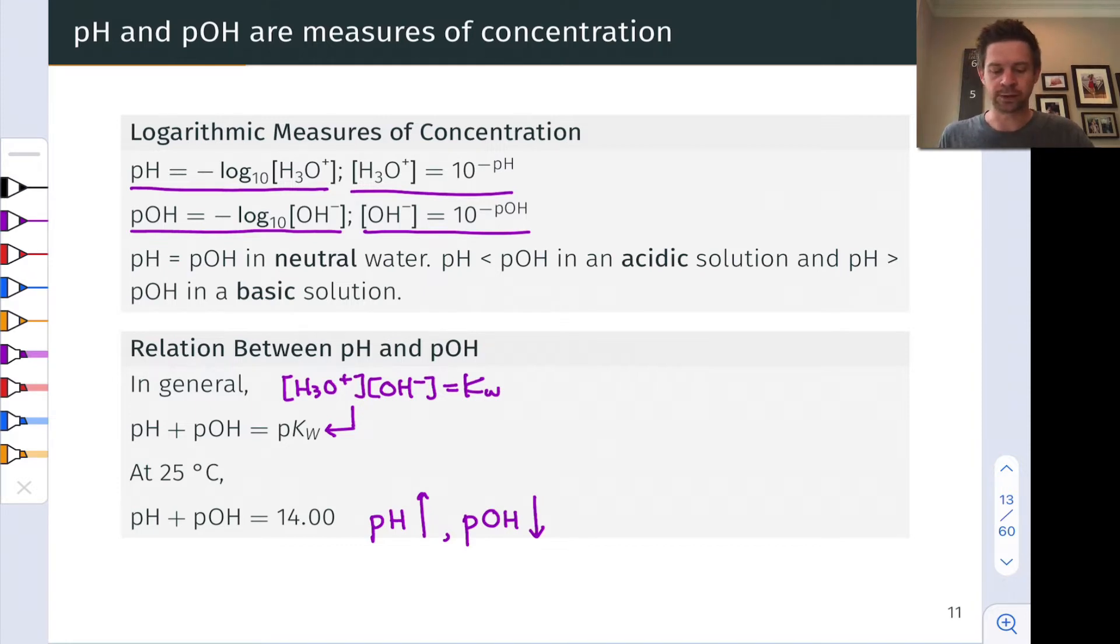Before I move on, that holds regardless of the temperature. In neutral water, pH is equal to pOH regardless of the value of KW. So at higher temperatures, lower temperatures, whatever the temperature is, pH is equal to pOH in a neutral water solution. This is in fact the definition of a neutral solution.